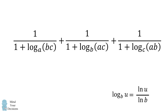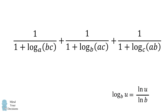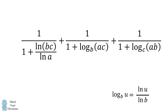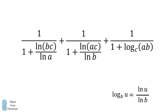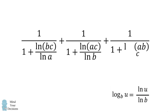Let's now tackle the original problem. We'll use the change of base formula on each of the logarithms. The first logarithm transforms into the natural log of the product BC divided by the natural log of A. The second will transform into the natural log of the product AC divided by the natural log of B. The third logarithm will become the natural log of the product AB divided by the natural log of C.